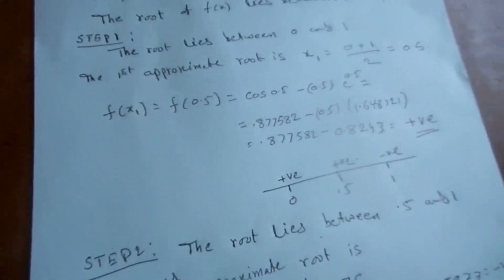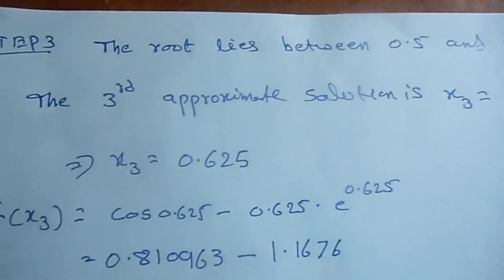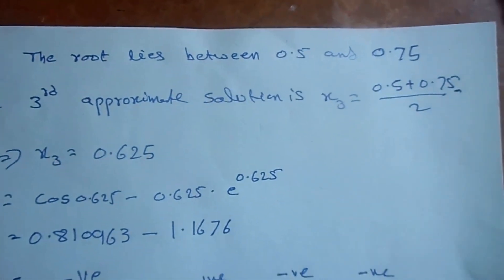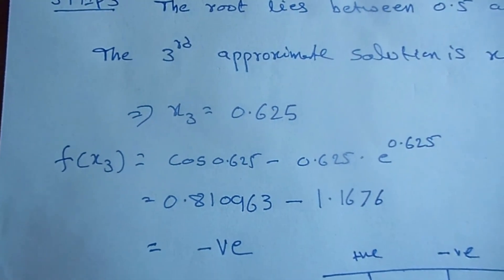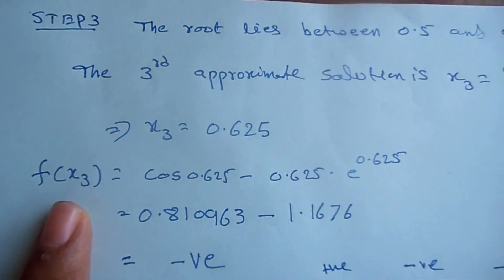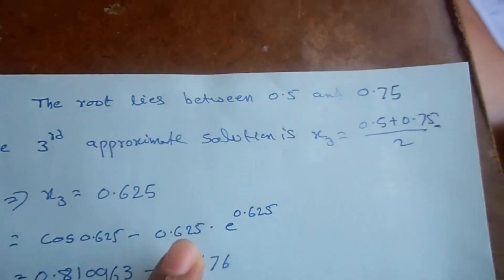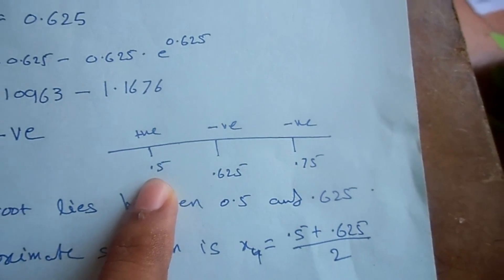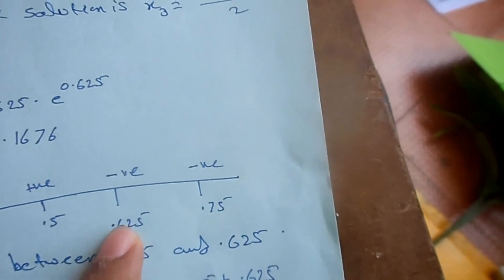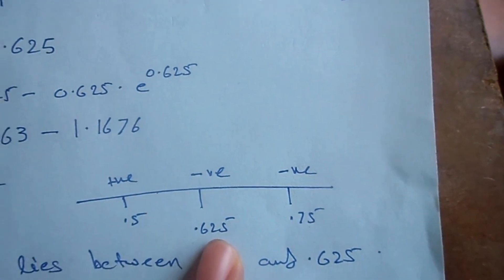Step 3: the root lies between 0.5 and 0.75. The third approximate solution is x3 = (0.5 + 0.75) / 2 = 0.625. We compute f(x3) = cos(0.625) minus 0.625·e^0.625, which is negative. At x=0.5 it is positive, at x=0.75 it is negative, at x=0.625 it is negative. So the next interval is between 0.5 and 0.625.